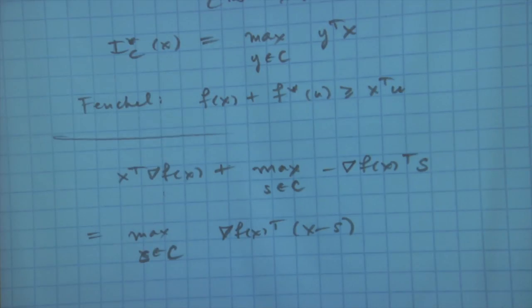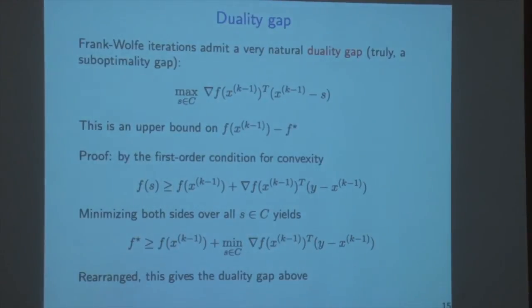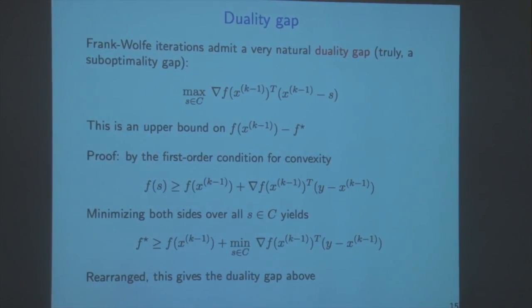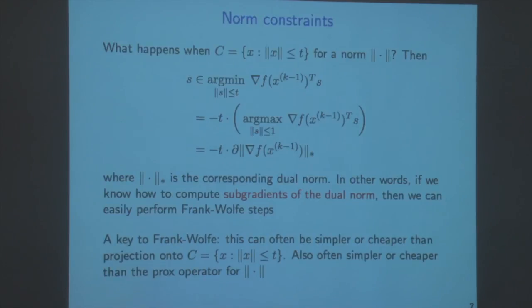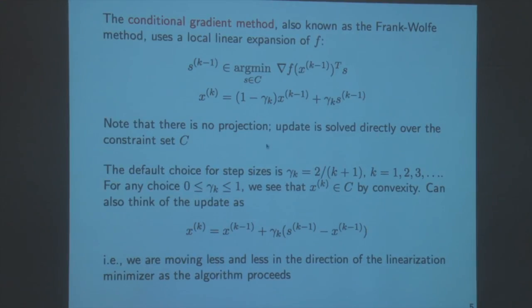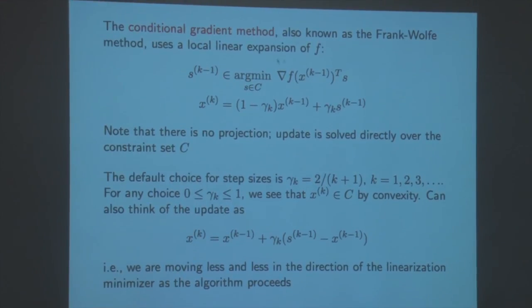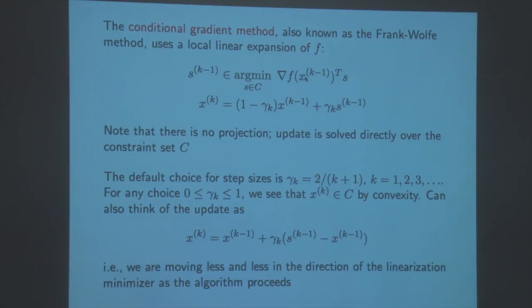So this bound gives us a way to stop Frank-Wolfe. The iterations proceed as follows: compute the gradient of f at x_{k-1} transpose (x_{k-1} minus s_{k-1}) - that's the duality gap. Stop the algorithm if that's small; otherwise make the update. Just stick in a stopping rule right there based on the duality gap.